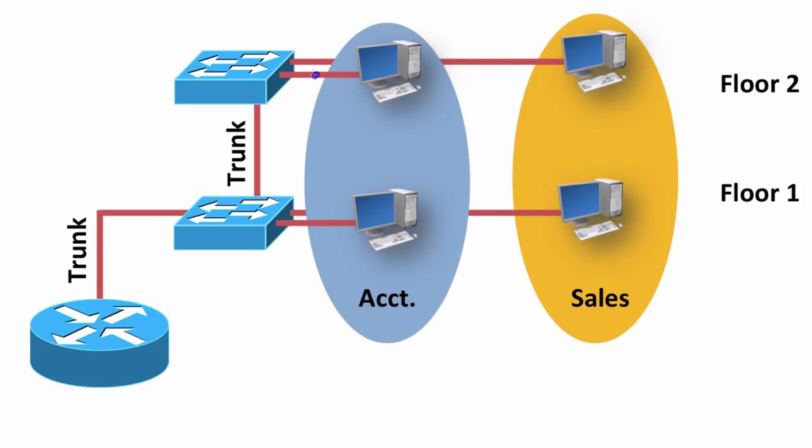Let's say that we've got a frame coming from an accounting computer going into our switch. When the switch sends this frame over the trunk, it's going to send it with a tag. The tag is going to say that it belongs to the accounting VLAN.